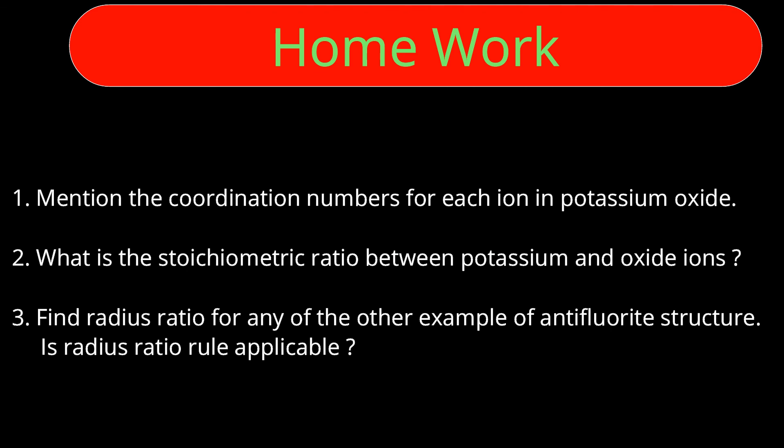Students, now homework. In this potassium oxide crystal, what is the coordination number of potassium and what is the coordination number of oxide? Mention stoichiometry ratio between potassium and oxide in unit cell. Complete potassium ions and complete oxide ions present in unit cell, that ratio. After all you can simplify that. And third question, find radius ratio for any other example of antifluoride category and predict or say whether radius ratio rule is applicable or not. Are these questions clear?